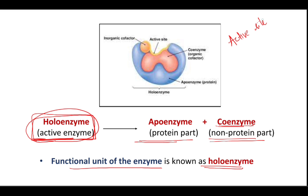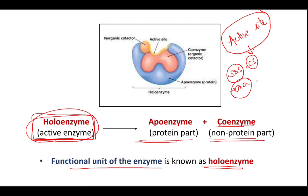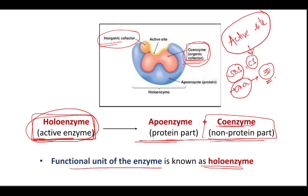In summary, the active site is the smaller region on the enzyme required for its catalytic activity. It has substrate binding sites and a catalytic site, made up of amino acids in a 3D arrangement — not linearly arranged. In addition to the protein part, the active site may also require non-protein co-factors, which can be organic or inorganic. The protein part is the apo-enzyme, the non-protein part is the co-enzyme, and together they form the holo-enzyme, which is the active enzyme.